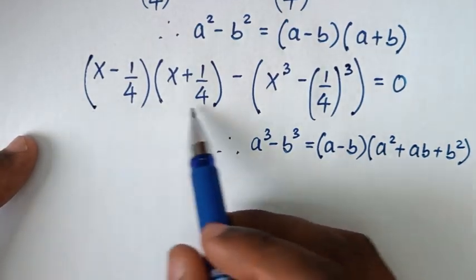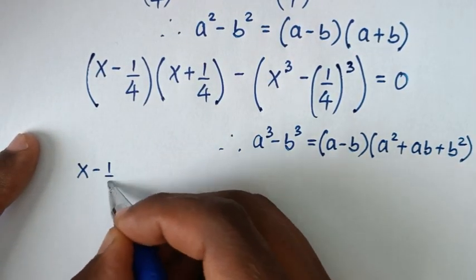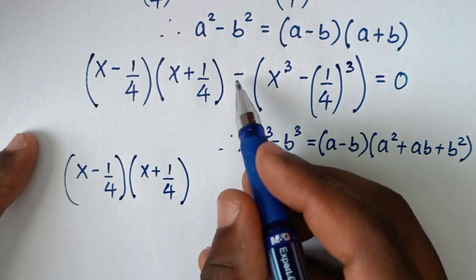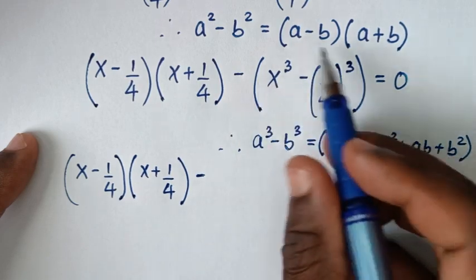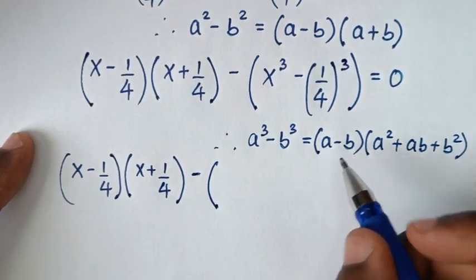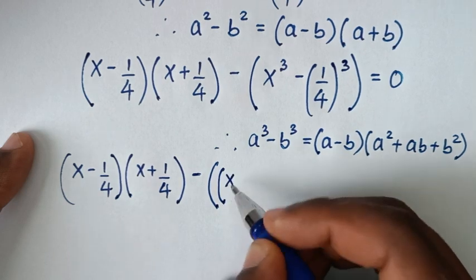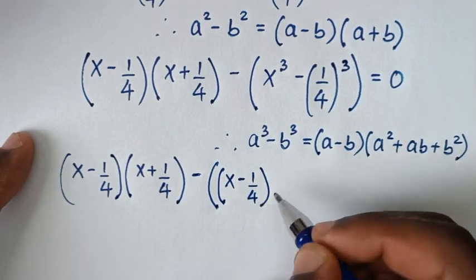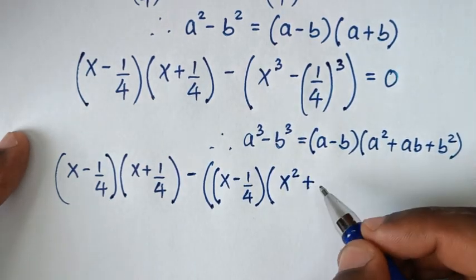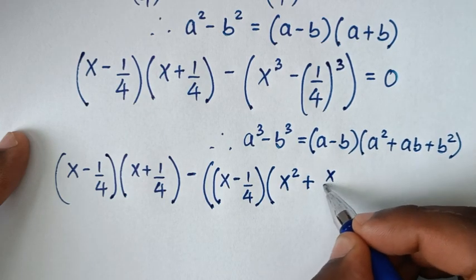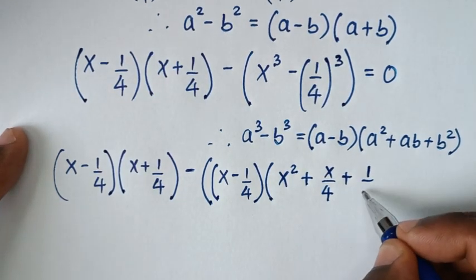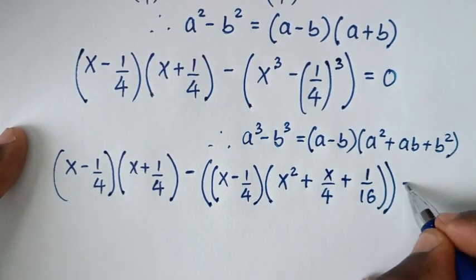So we start with (x minus 1/4) times (x plus 1/4), then applying the cube rule to the second part: (x minus 1/4) times (x squared plus x times 1/4, which is x over 4, plus (1/4) squared, which is 1 over 16), equal to 0.